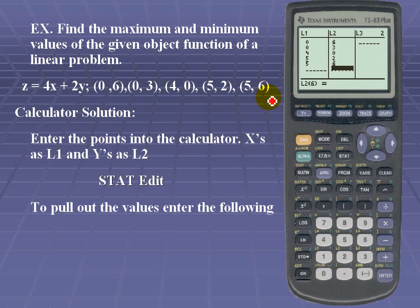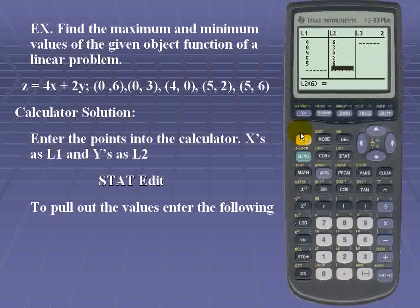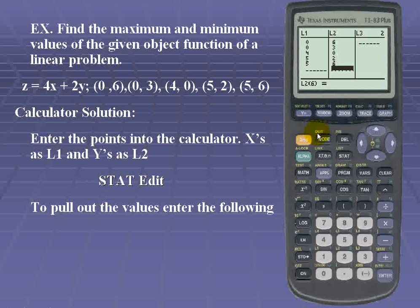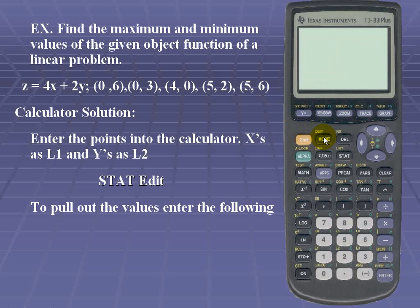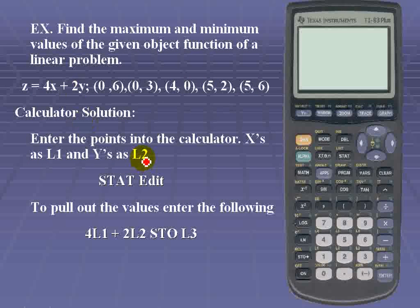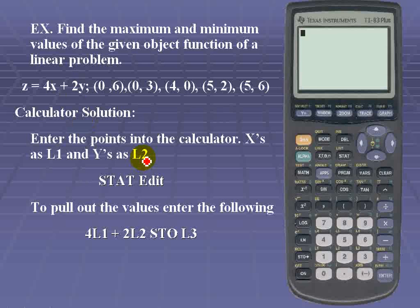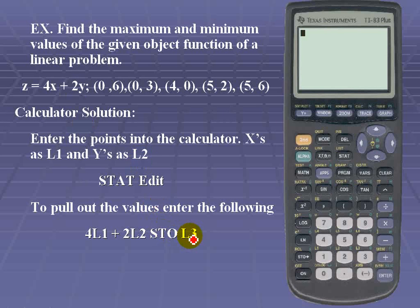So now we want to pull out the following values. We'll go back to our home screen, which is the quit key. Since it's a yellow function, it's second and mode, which is our quit key. And we'll simply enter in our function. It's 4 times x, but remember we stored our x values as list 1 plus 2 times y. And remember we stored our y values as list 2. We're going to store everything in list 3.